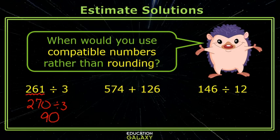In money, we know that 75 cents plus 25 cents make a dollar, so if I think of this number as 575 and the second number as 125, I can mentally say this is 500, 600, and the 75 and 25 make another 100, so this is 700.